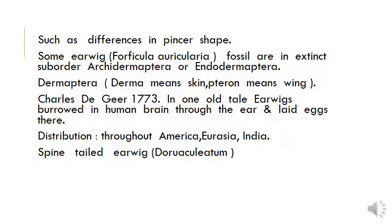According to one old tale, earwigs burrowed into the human brain through the ear and laid their eggs. Ek purani kahani ke anusar, earwigs human brain mein enter kar gaye ear ke through, aur wahan par eggs lay kare. Distribution is throughout America, Eurasia and India.